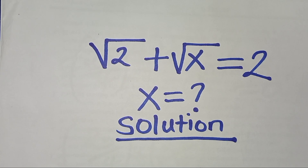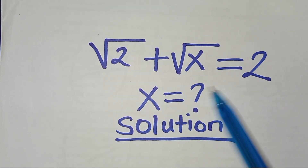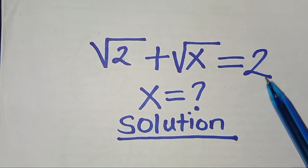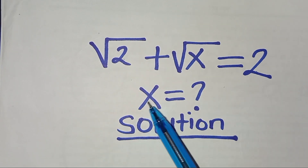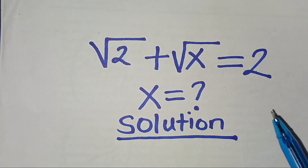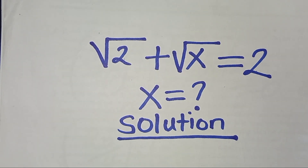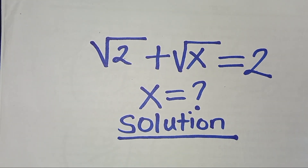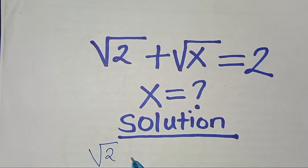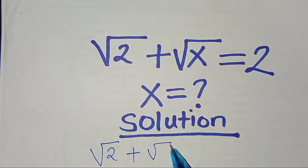Welcome to this solution. We're given the square root math problem: the square root of 2 plus the square root of x equals 2. We need to find the value of x. Before diving in, if it's your first time watching my videos, kindly like and subscribe so you get notified when I upload.